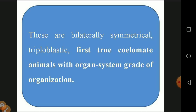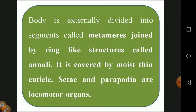Before Annelida — from Porifera up to Aschelminthes — organisms had only a cellular level of organization with no organ development, only cells. But from phylum Annelida, organisms start at the organ system level of organization. Recapping: a group of cells is called a tissue; a group of tissues is called an organ; a group of organs is called an organ system; a group of organ systems is called an organism.